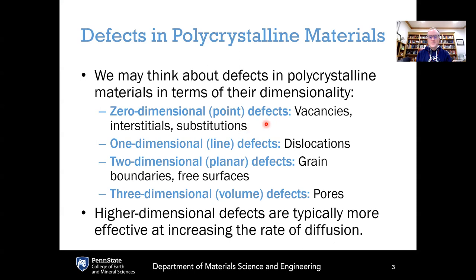Now if we increase the dimensionality by one, the next type of defect would be a one-dimensional defect or a line defect, and within a crystal this is known as a dislocation. There are a couple of types of dislocations which we're going to cover today, including what they are and how they impact diffusion.